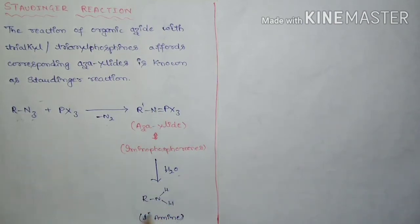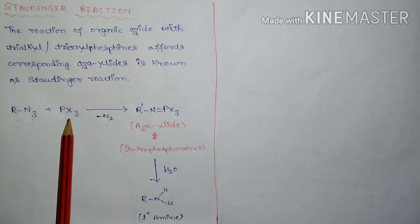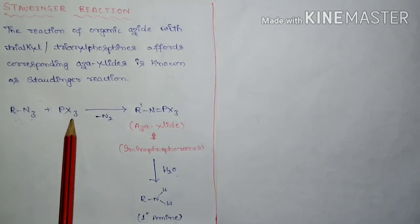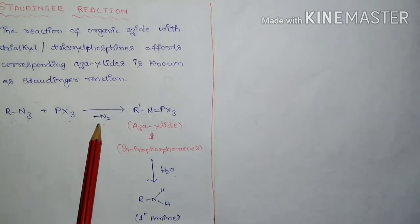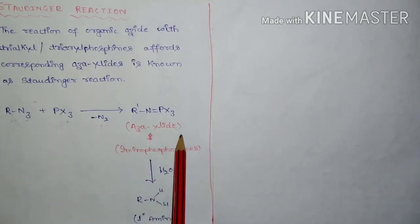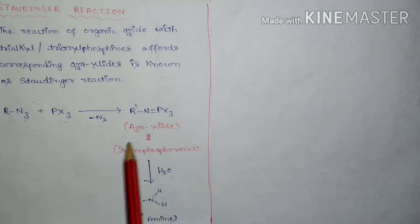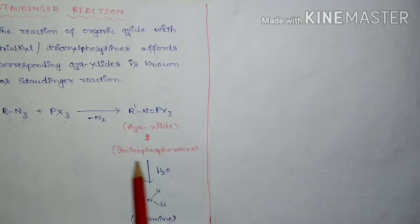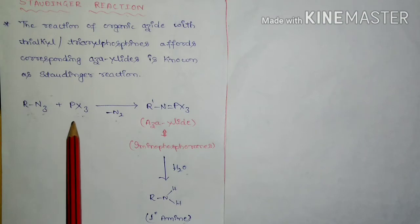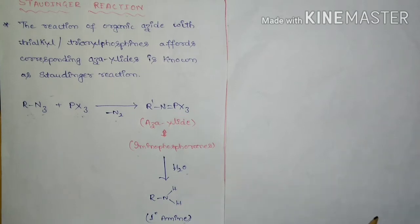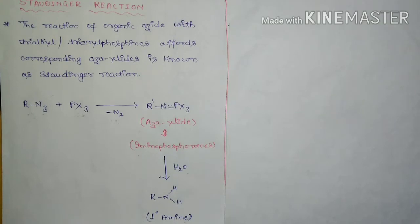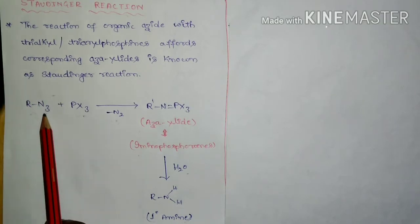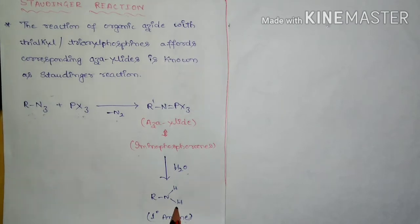The reaction is shown here: an organic azide on reaction with trialkyl or triaryl phosphines results in the loss of a dinitrogen molecule, leading to the formation of an iminophosphorane. This formation of iminophosphorane by the reaction of an organic azide with trialkyl or triaryl phosphine is known as the Staudinger reaction, which is also known as a reduction reaction — specifically, the reduction of an azide to an amine.